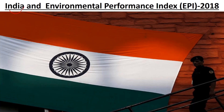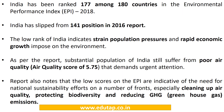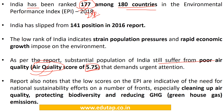India has ranked 4th worst performing country, securing 177th rank among 180 countries in EPI 2018. Among all 10 issue categories, the worst position is in air quality, with a score of just 5.75 out of 100. India's low rank indicates urgent attention is needed towards cleaning up air quality, protecting biodiversity, and reducing greenhouse gas emissions.